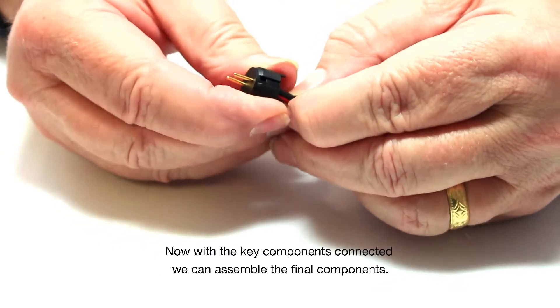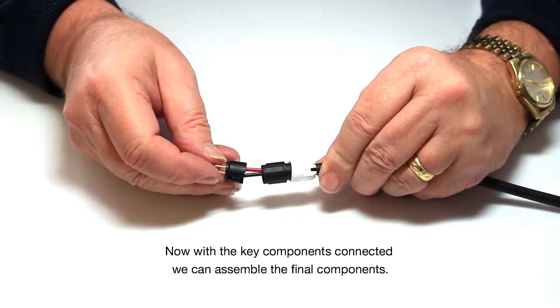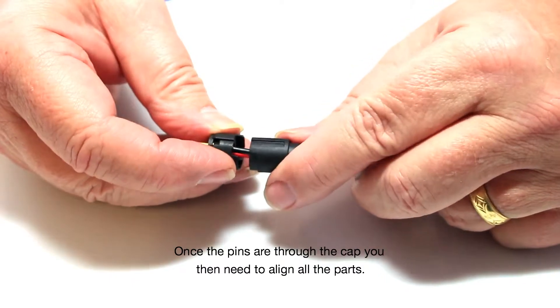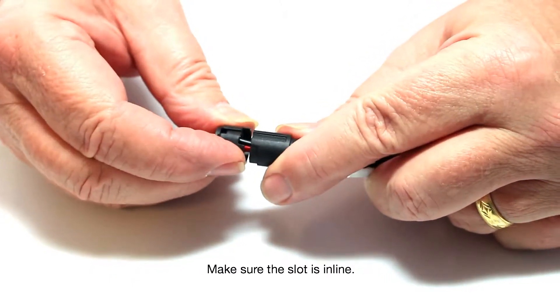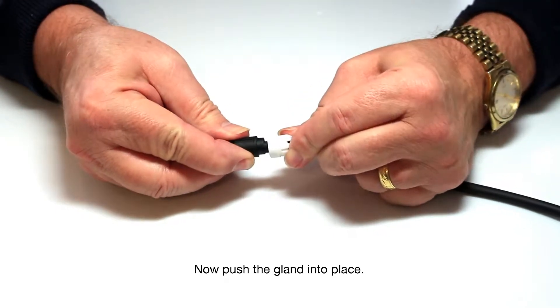Now with the key components connected, we can assemble the final components. Once the pins are through the cap, you then need to align all the parts. Make sure the slot is in line. Now push the gland into place.